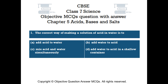Question number 1. The correct way of making a solution of acid in water is to: Option A, add acid to water. Option B, add water to acid. Option C, mix acid and water simultaneously. Option D, add water to acid in a shallow container.